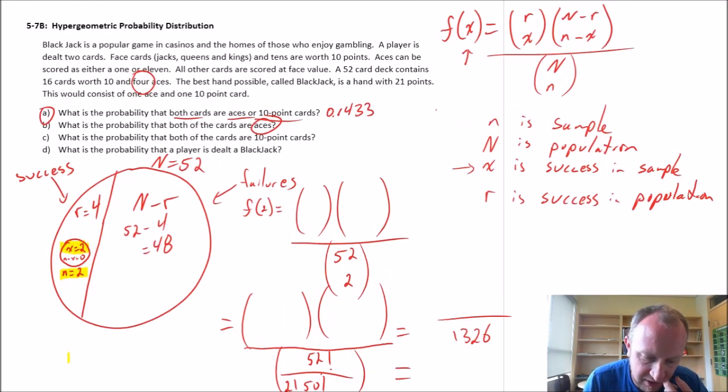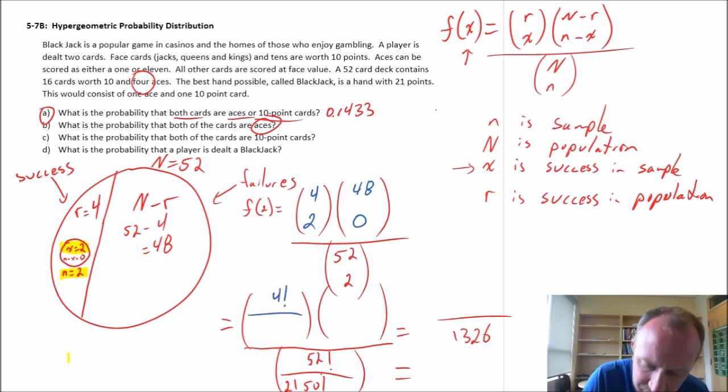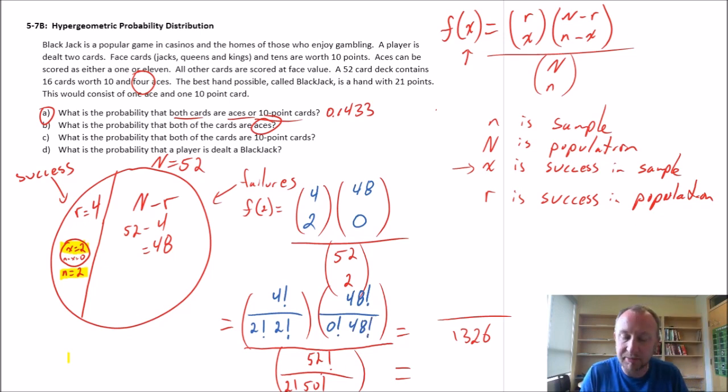So let's go through this calculation again. I have now only four successes within the population. I want both of those cards in my sample to be defined as a success. My failures, I have 48 in the population and none in my sample. The denominator does not change, because that's dependent on the population size, which the deck of cards doesn't change size. And my sample, I'm only ever getting two cards, so the sample size doesn't change either. So let's fill this out in the combinatorial notation. 4 factorial over 2 and 2, and this is 48 factorial divided by 0 and 48.